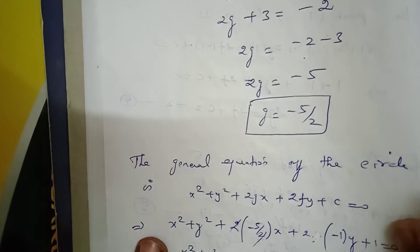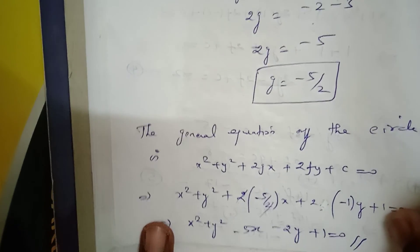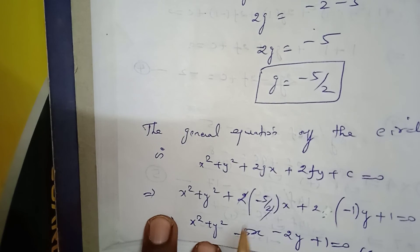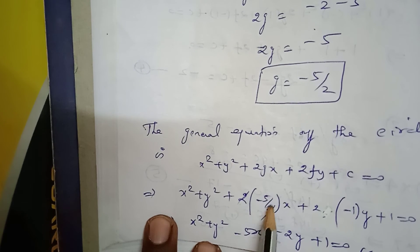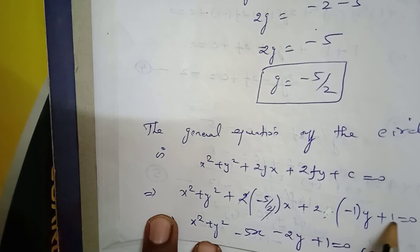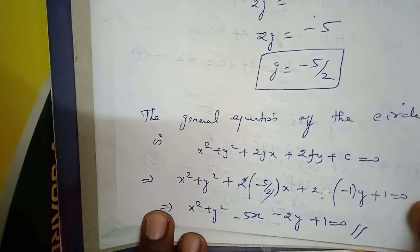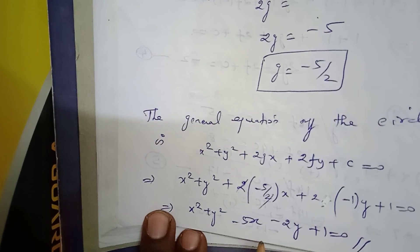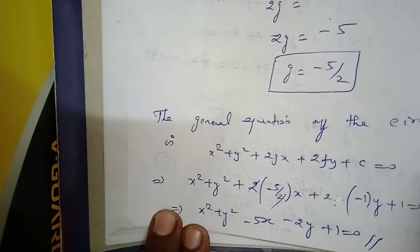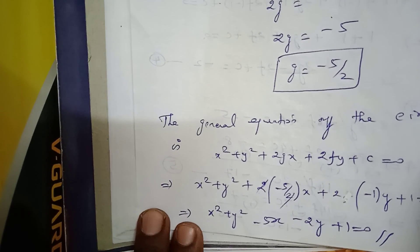The general equation of a circle is x² + y² + 2gx + 2fy + c = 0. Substituting g = -5/2, f = -1, and c = 1: x² + y² + 2(-5/2)x + 2(-1)y + 1 = 0. So finally the equation of the circle is x² + y² - 5x - 2y + 1 = 0. That is the solution.